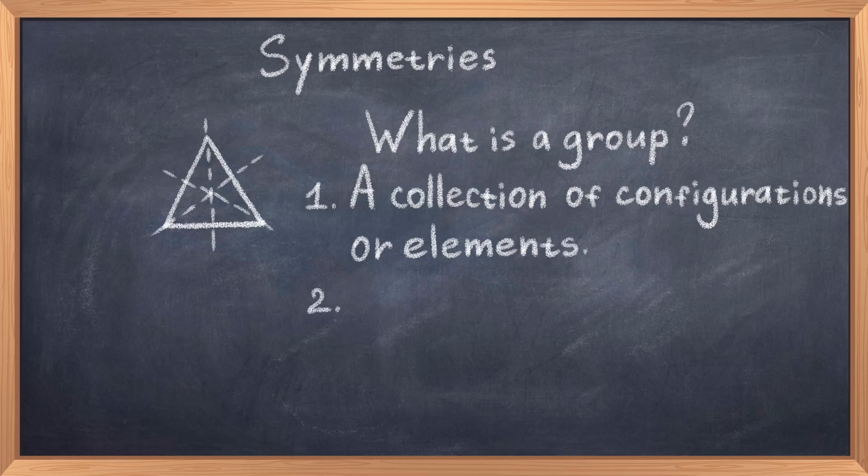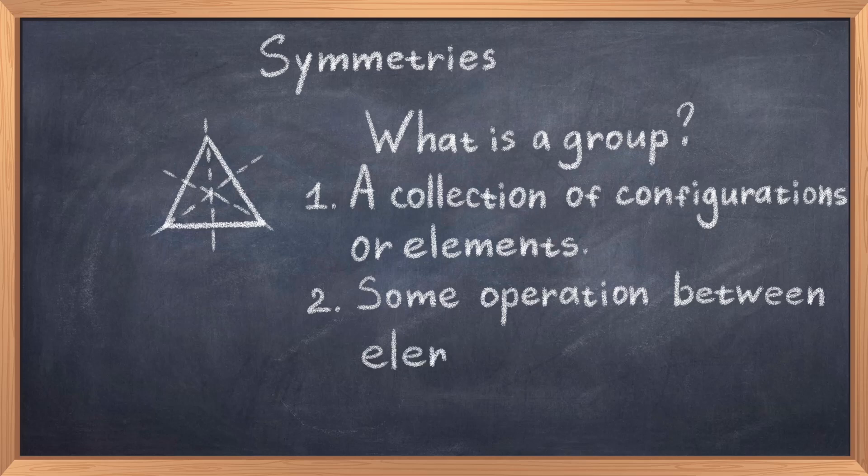A group is formed by two main things. Firstly, the different ways we can configure our object, thus in the case of the triangle it would mean all the ways we could mirror and rotate the triangle to obtain a similarly looking triangle. Secondly, we need an operation to get from one configuration to another, and in the case of this triangle it could be rotations or mirroring. There are also some more details to what a group is.